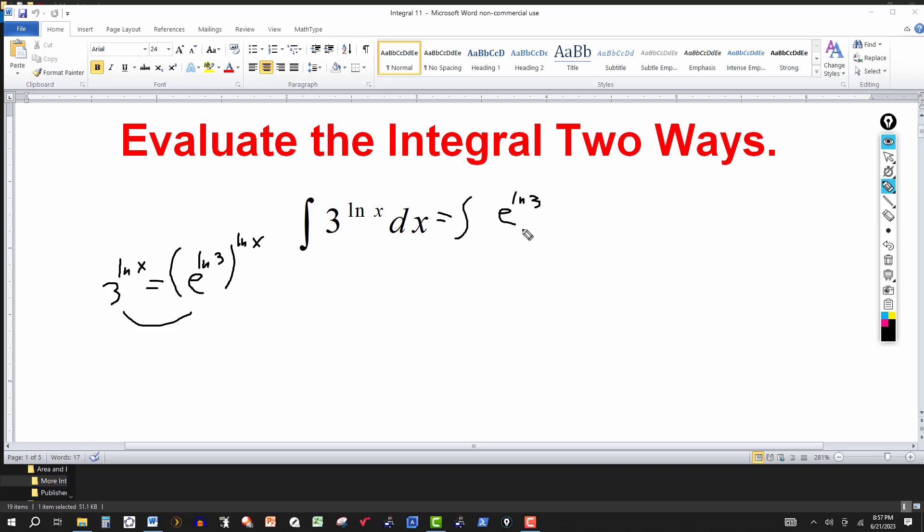And then that's taken to the ln of x power. This is dx. Just another way of writing this. This is 3, or this is 3^(ln x). Same thing.